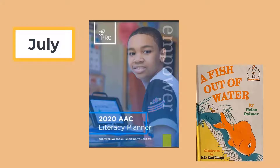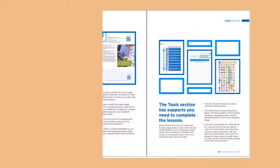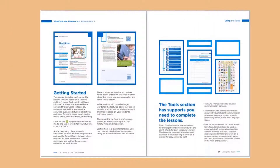We invite you to learn about AAC and literacy through the 2020 PRC AAC Literacy Planner. This month's story is called A Fish Out of Water. Our AAC Literacy Planner was designed as a tool to help educators, speech-language pathologists, and parents offer beginning literacy activities to learners using AAC.